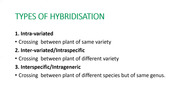There are different types of hybridization. First is intravariated hybridization, which involves crossing between plants of the same variety. Next is intervariated, or intraspecific hybridization, where crossing between plants of different varieties is done. Last is interspecific, or intrageneric hybridization, where crossing is done between plants of different species but of the same genus.